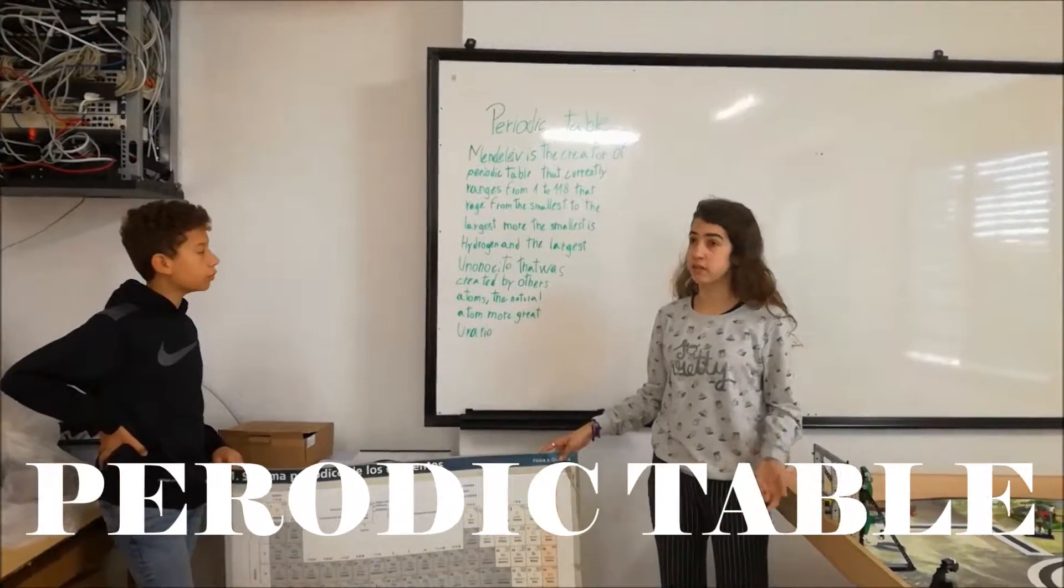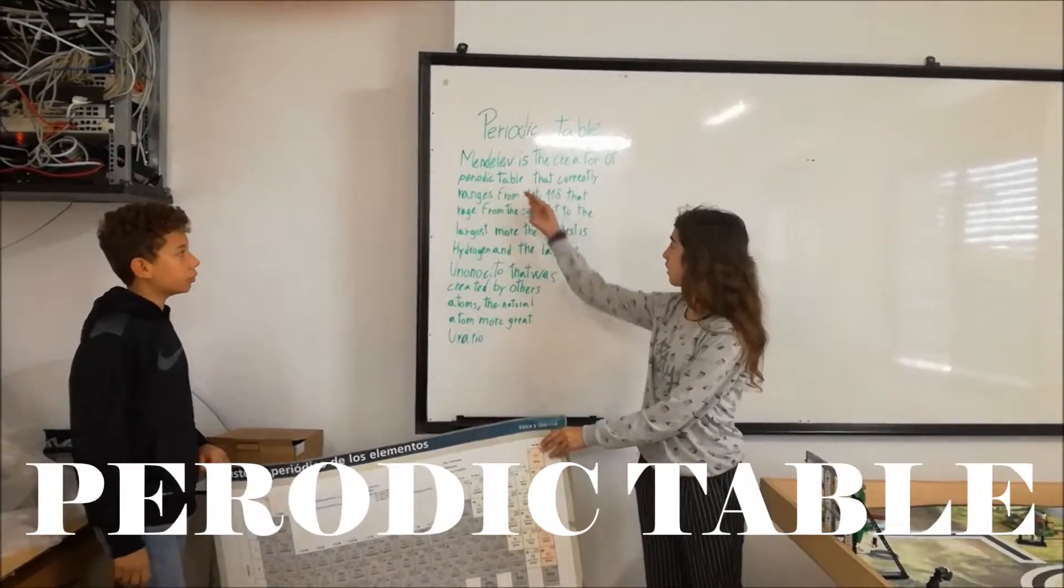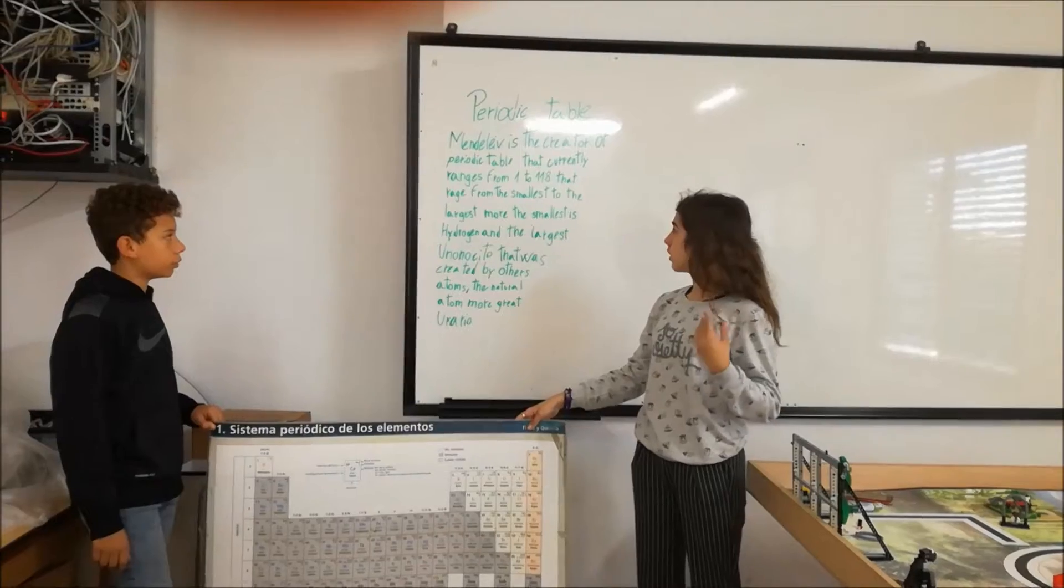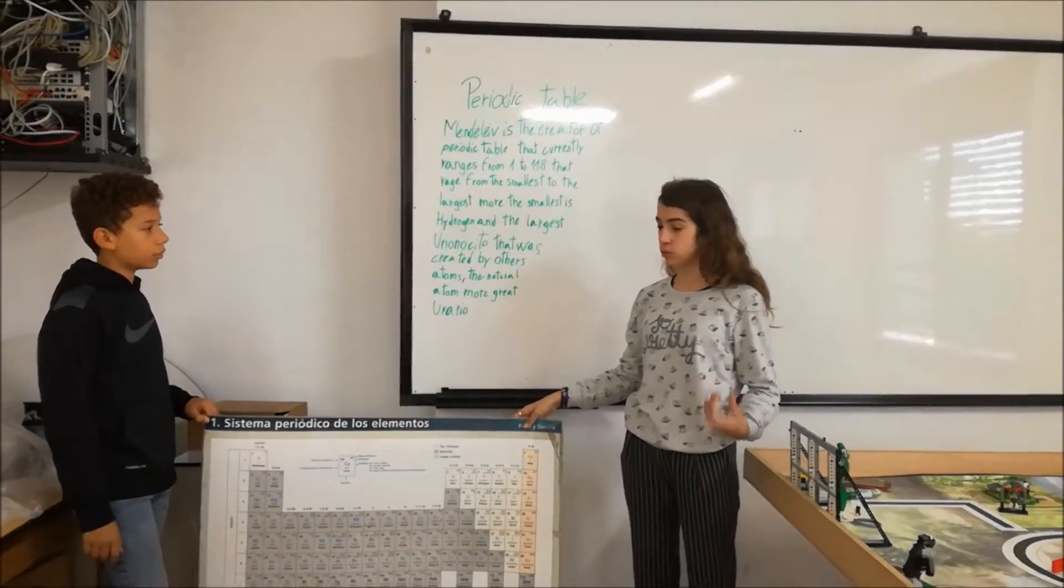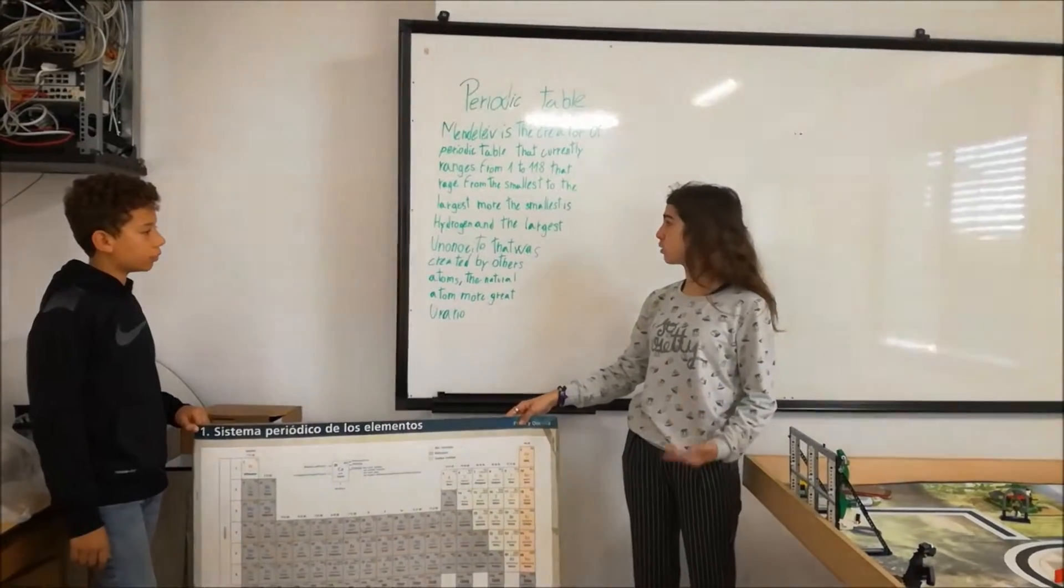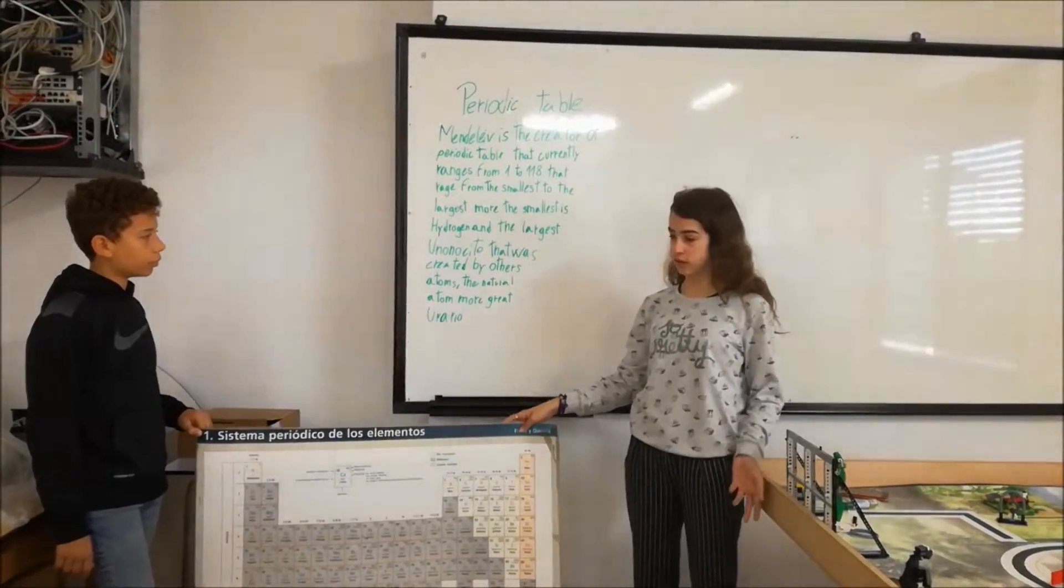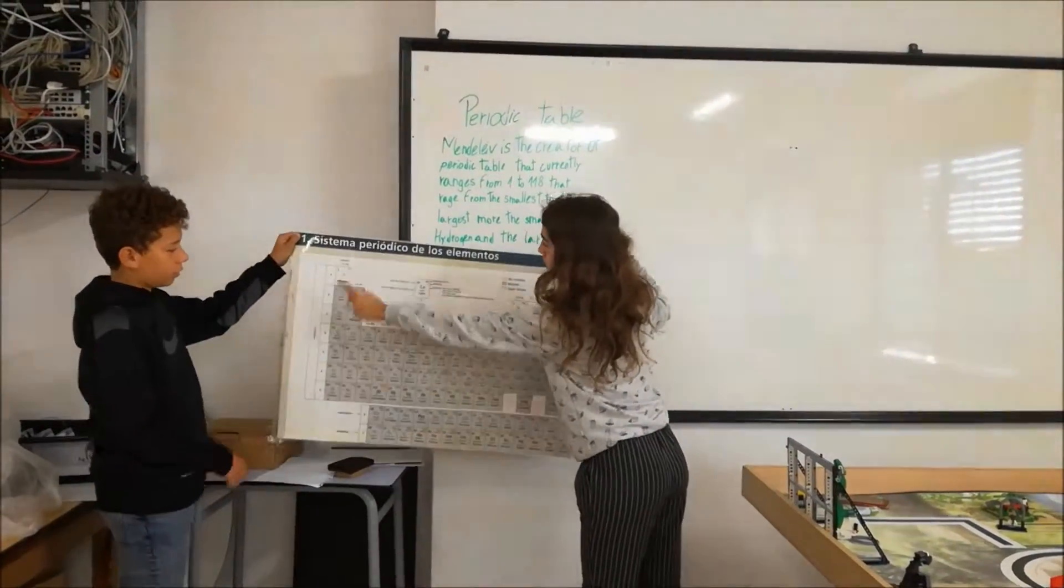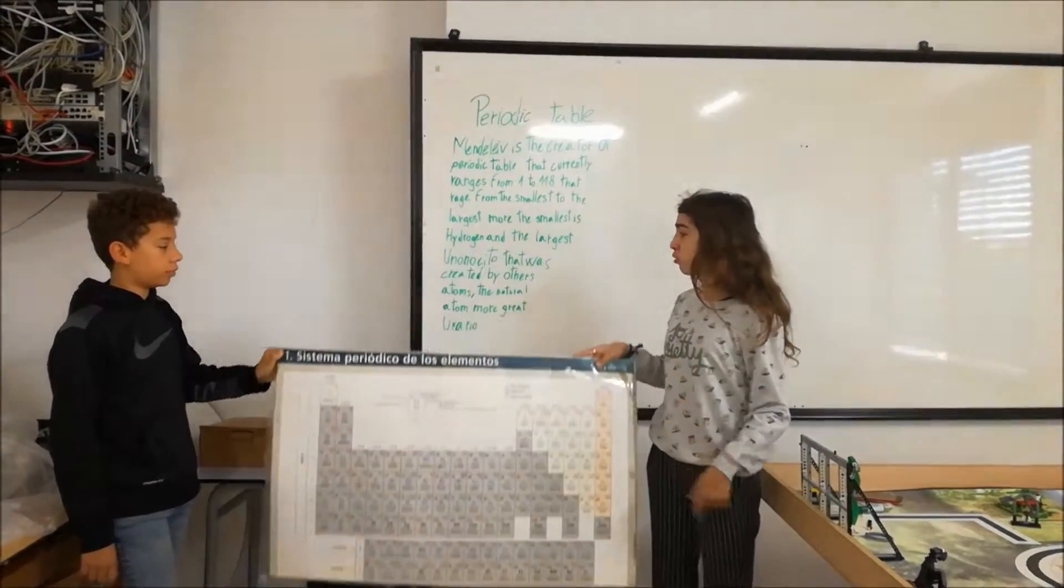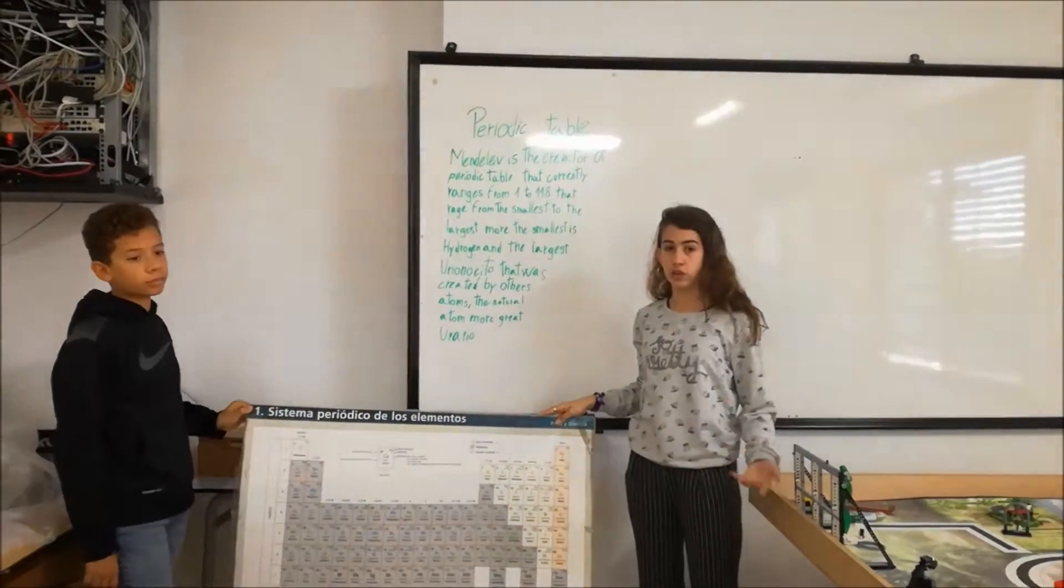Periodic table. The creator of the periodic table. That currently reaches from 1 to 118, that reached from the small to the large. More in the small it is hydrogen and the largest are uranio. That was created for other atoms.